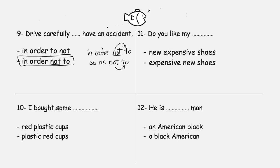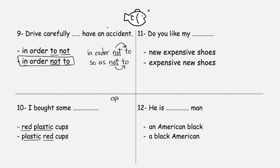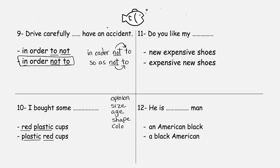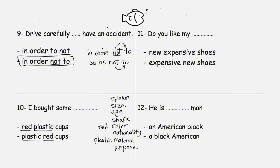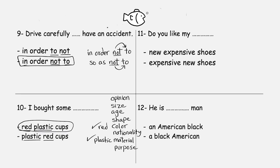'I bought some red plastic cups' or 'plastic red cups' — which order is correct? You need to know that your opinion comes before size, then age, then shape, then color, then nationality, then material, and finally purpose. Here we have 'red,' which is a color, and 'plastic,' which is the material. Since color comes before material, 'red plastic cups' is the correct order.